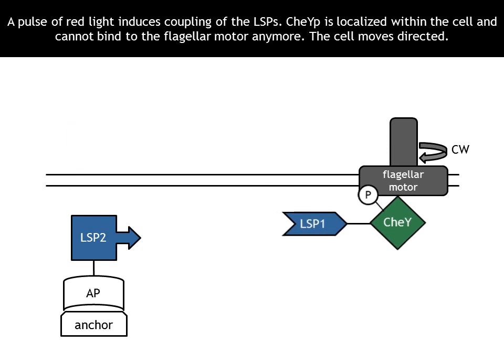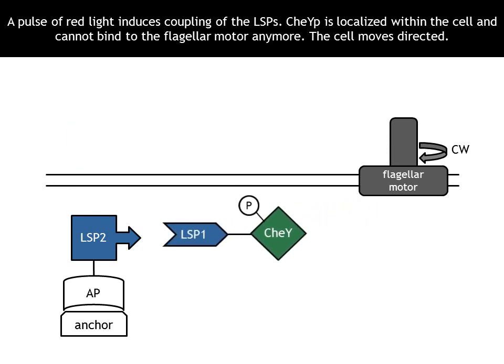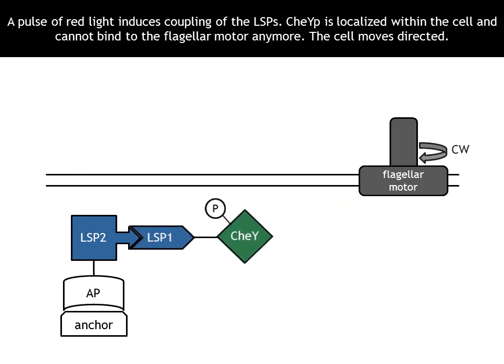A pulse of red light induces coupling of the light-sensitive proteins. CheYP is localized within the cell and cannot bind to the flagellar motor anymore. The cell moves directed.